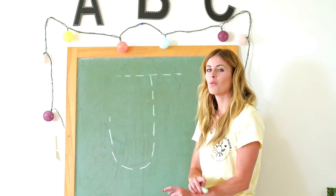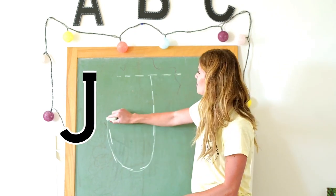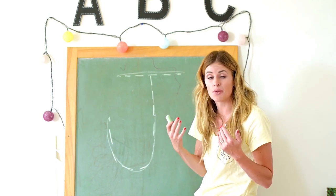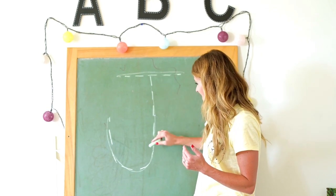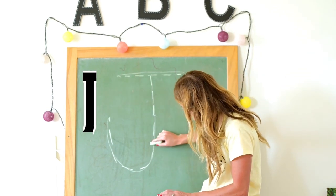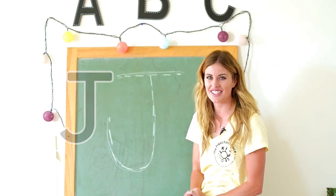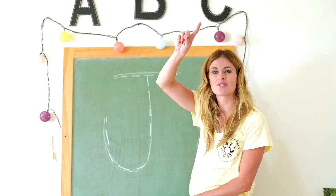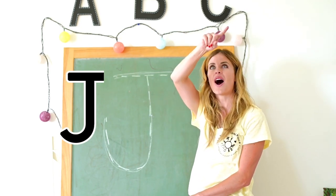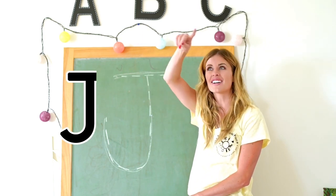Watch me write it on the chalkboard: down, curve, up, across J. Let's say it as if we were a Jack in the Box — we're going to do this and then pop up on the across: down, curve, up, across J. Put your finger in the air and write it with me: down, curve, up, across J. Down, curve, up, across J.